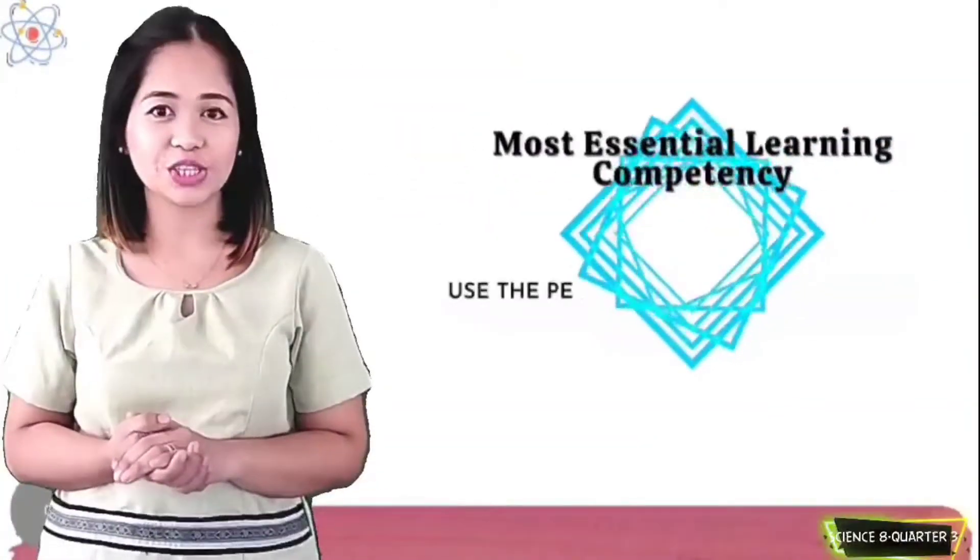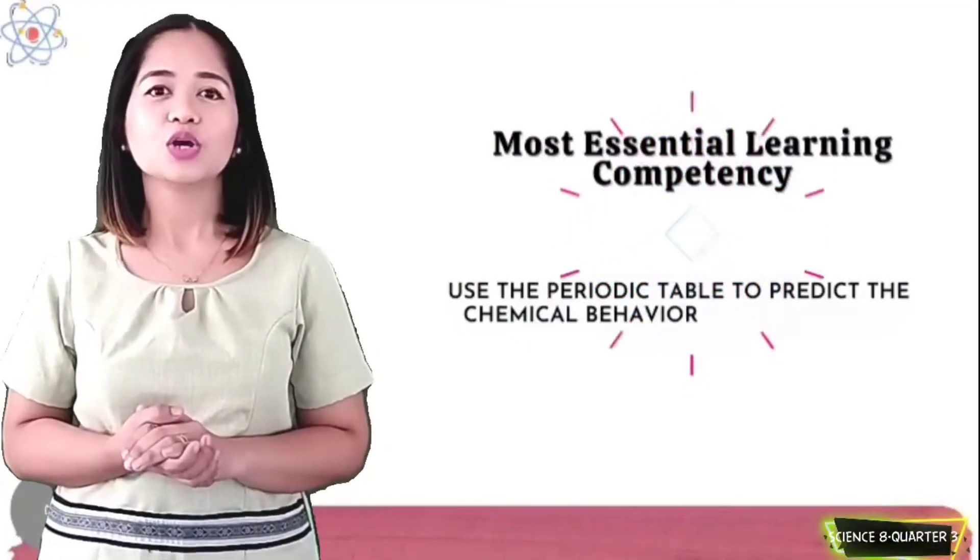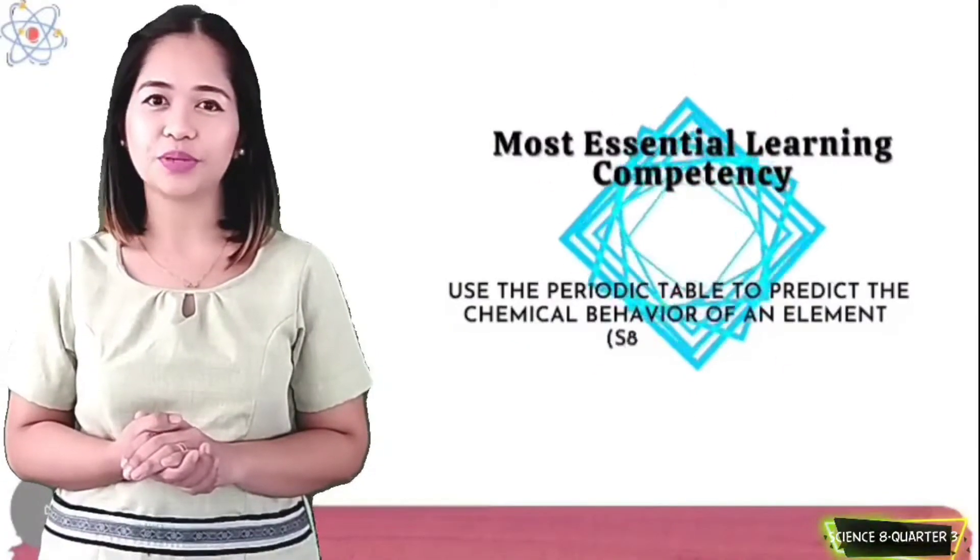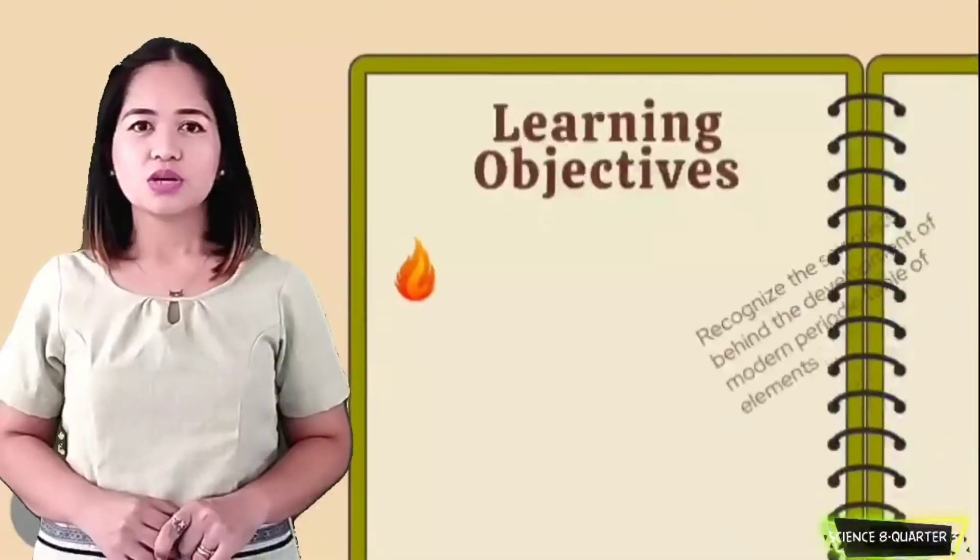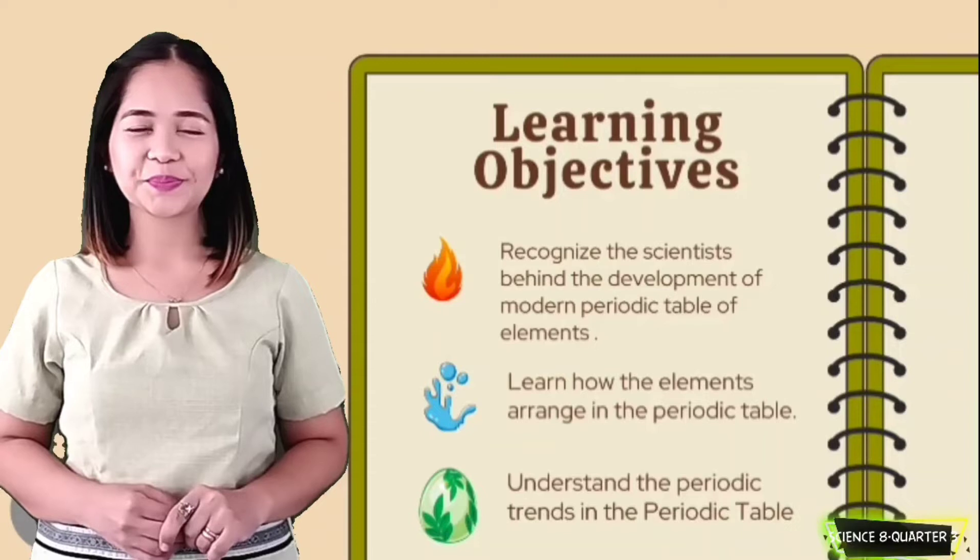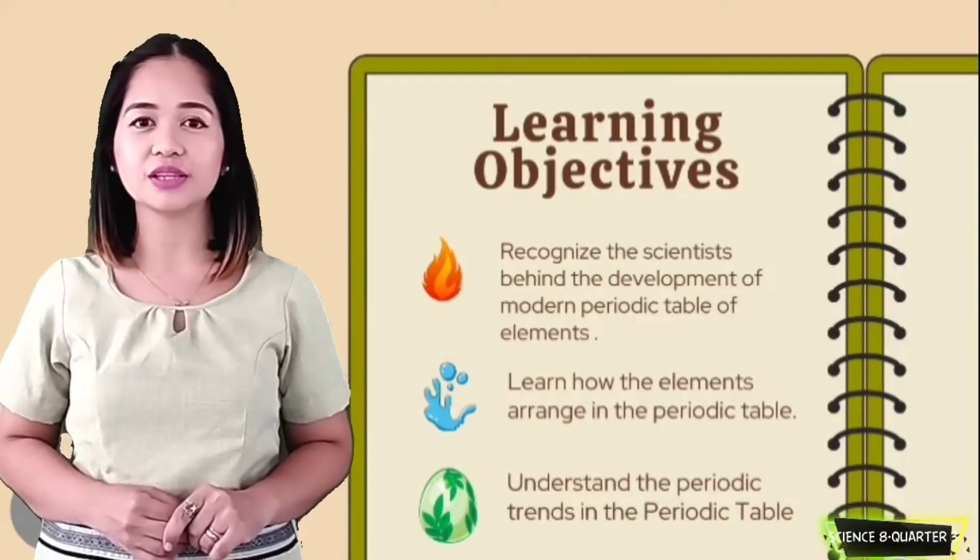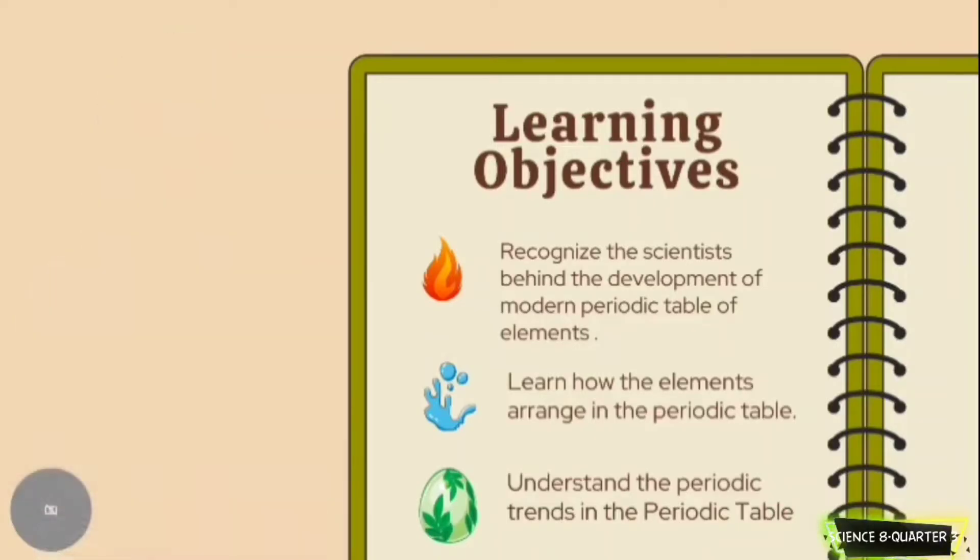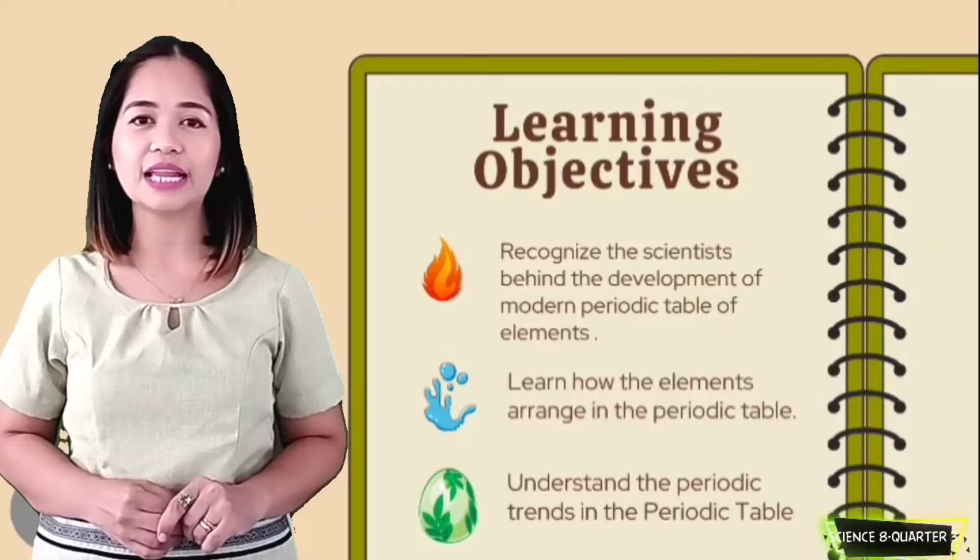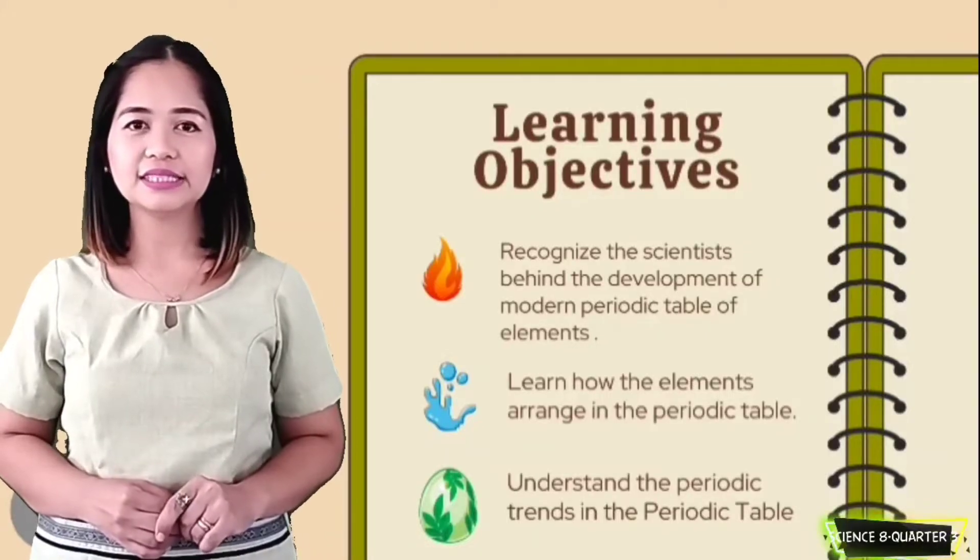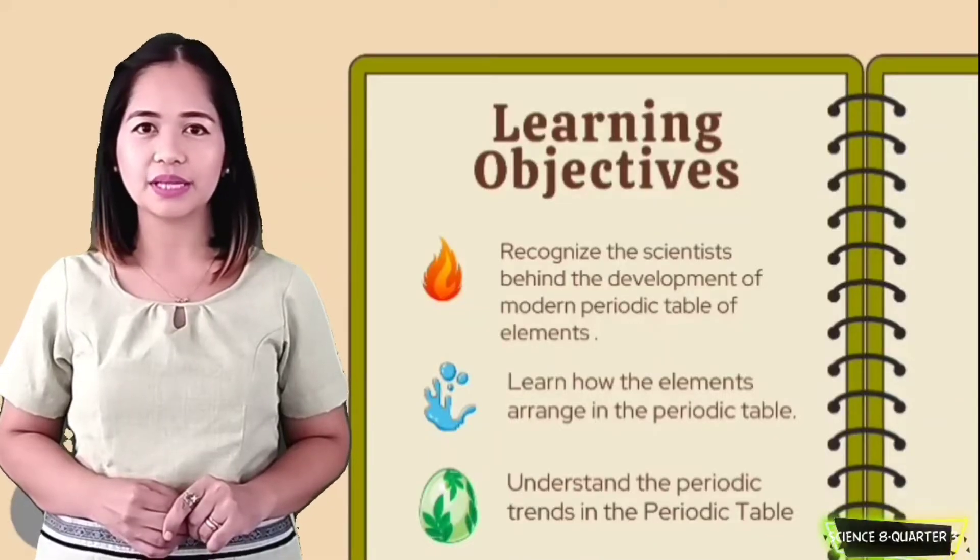For this session, our most essential learning competency is you can use the periodic table and predict the chemical behavior of an element. Our learning objectives are: recognize the scientists behind the development of periodic tables, learn how the elements are arranged in the periodic table of elements, and understand the periodic trends in the periodic table of elements.